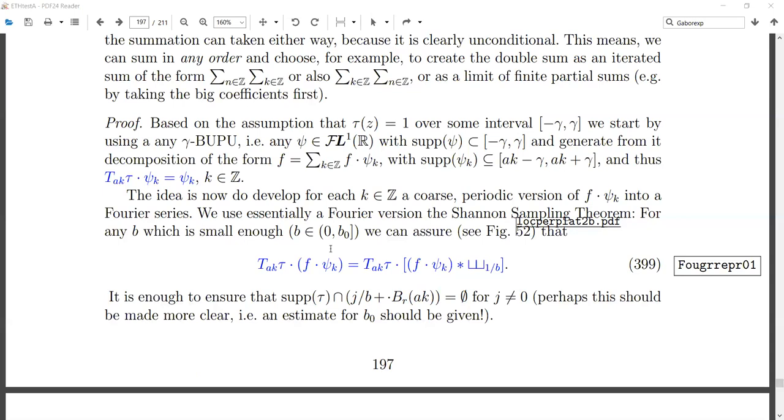Now we're doing something like in the Shannon sampling theorem. We are looking at the atoms, we are saying F times Psi K, but now this is on the time side. We can say F times Psi K is F times left-hand side of this equation. But now the idea is if you take a big enough B, we are introducing the periodization now. So we are doing a very coarse periodization.